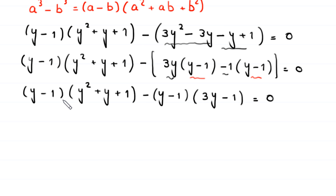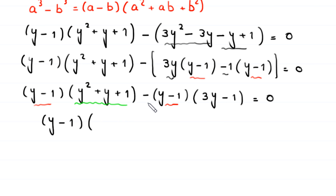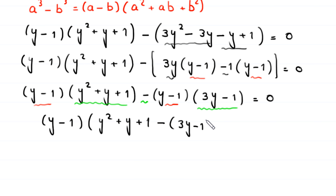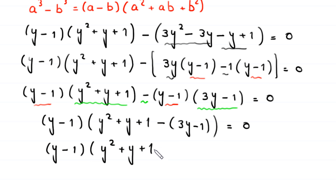We can see that (y − 1) is a common factor in both parts. Factoring it out, we get (y − 1)[(y² + y + 1) − (3y − 1)] = 0.